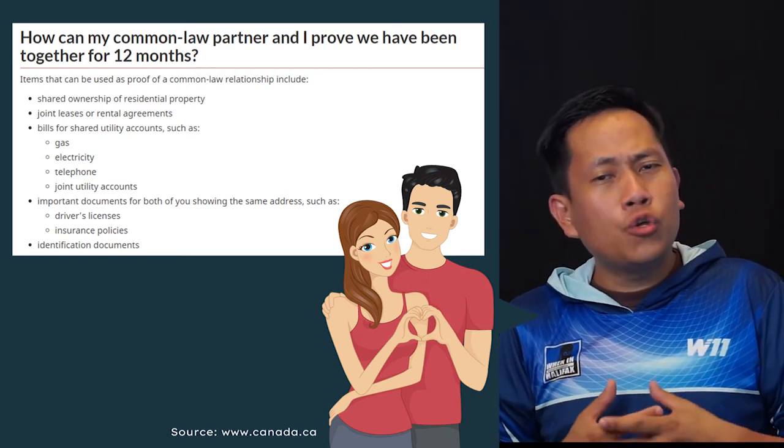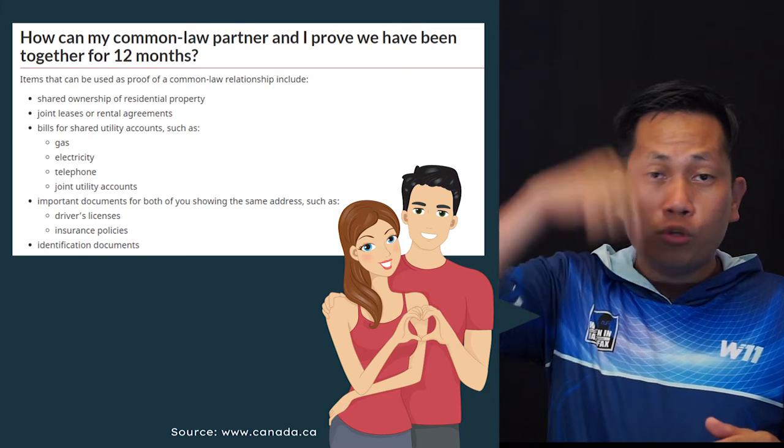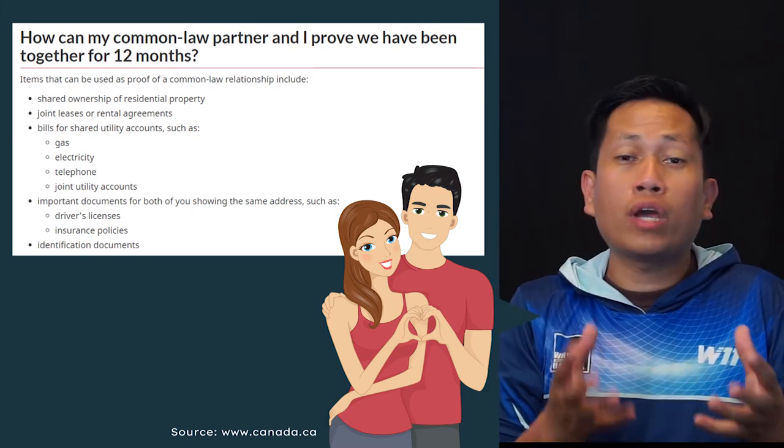Those are the documents that you need. I'm going to post the link in the description below so you can read the other information. The key to understanding common law is that you are living together in one house, the only thing missing is the marriage certificate, and then you are considered common law. You need to have supporting documents as mentioned.